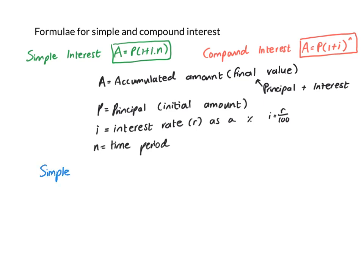Now let's see where the formulas come from. Simple interest is quite straightforward. The A value will be the principal value plus the interest earned on the principal for however many periods. If I factorise that, I get the simple interest formula: A = P(1 + i·n).